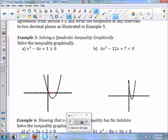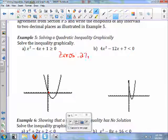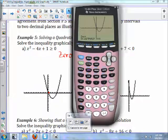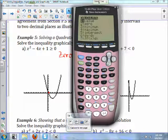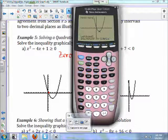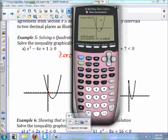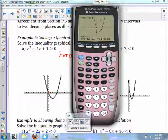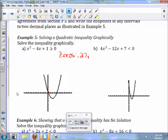0.27 is going to be my zero. So this point here, my zero, one will be 0.27. The other zero will be at 3.73.